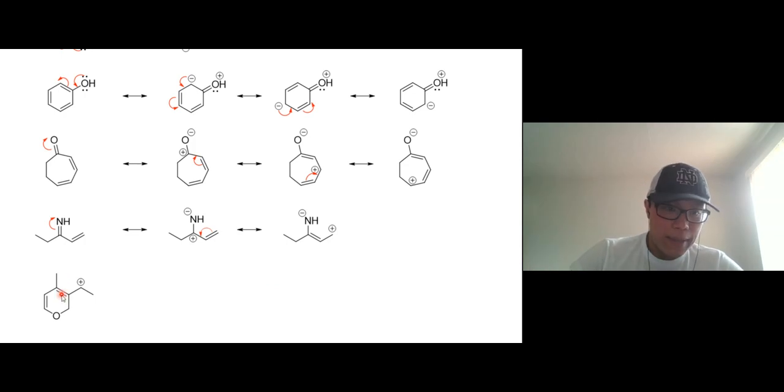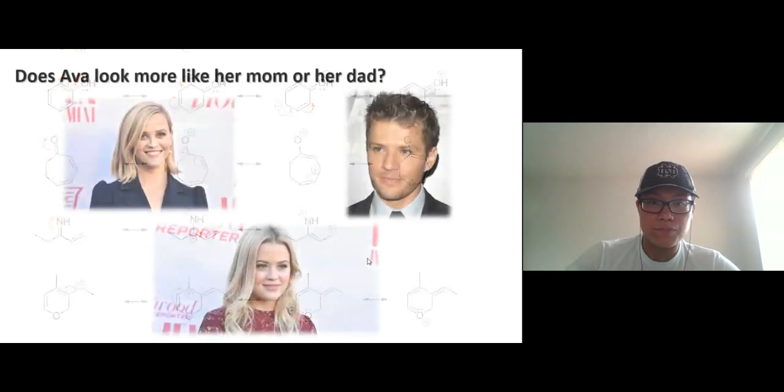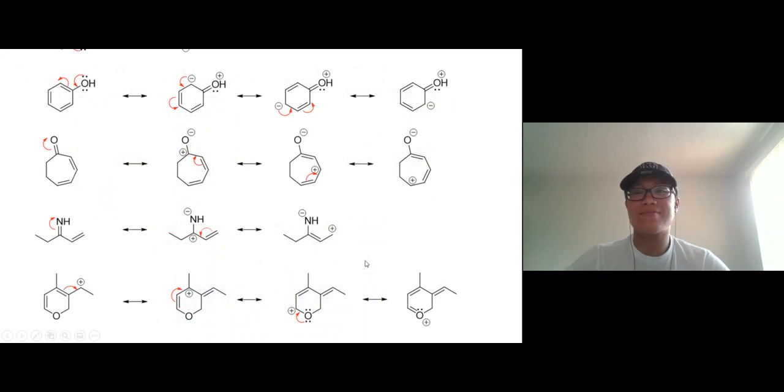Next one: double bond next to a carbocation, draw the arrow. Here we go, another double bond next to a carbocation, draw another arrow. Are we done yet? No, actually we're not. This oxygen has a lone pair—a lone pair next to a carbocation. Same thing, you can do another one. Here we go.